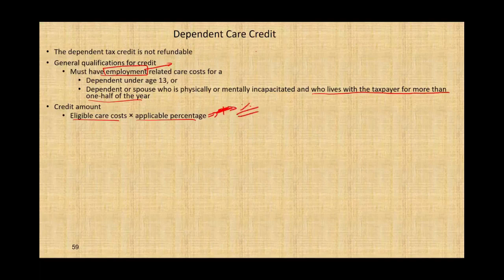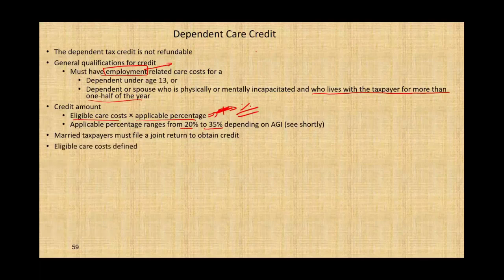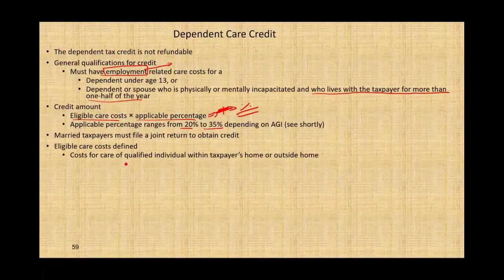The applicable percentage rates range from 20% to 35% depending on your adjusted gross income — we'll look at the table shortly. Married taxpayers must file a joint return to obtain the credit; if you're married filing separately, the credit is gone. Eligible care costs are defined as costs for care of a qualified individual at the taxpayer's home or outside the home — whether you pay for childcare inside or outside the home, that's fine.